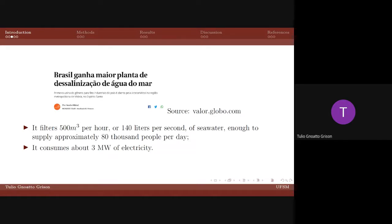To have an idea, in Brazil, one of the largest desalination plants filters approximately 140 liters of water per second, which is enough to supply about 80,000 people per day, but consumes approximately 2 megawatts of electricity.